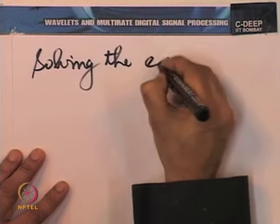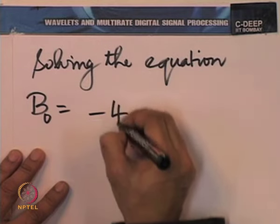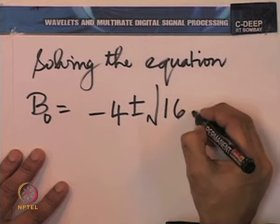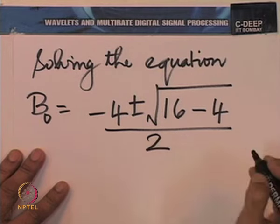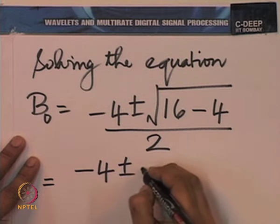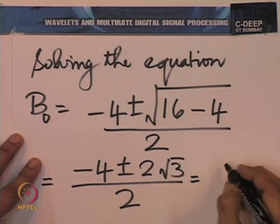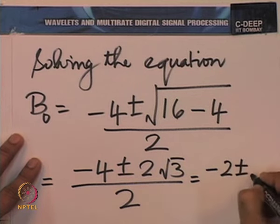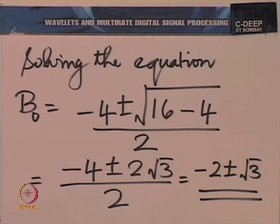Solving the quadratic equation using the quadratic formula b₀ = (-b ± √(b² - 4ac)) / 2a, we get b₀ = (-4 ± √(16 - 4)) / 2 = (-4 ± 2√3) / 2, giving two solutions: b₀ = -2 + √3 or b₀ = -2 - √3. Now, we have two solutions — which of them should we choose?